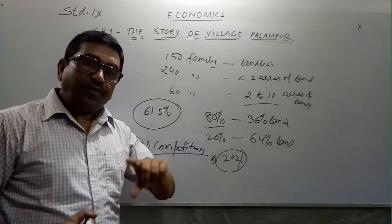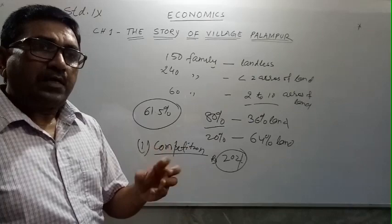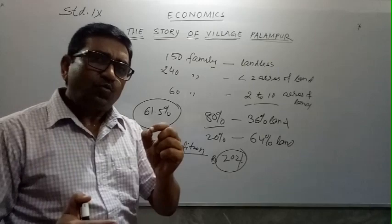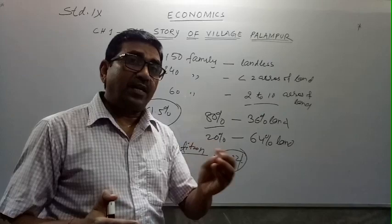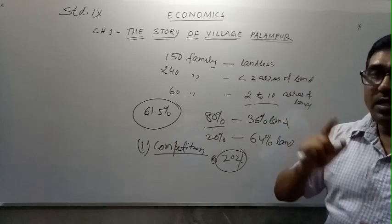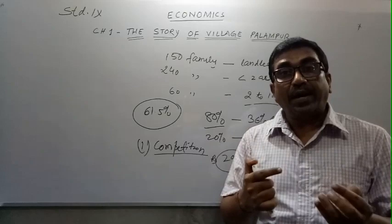Different state governments have different wage rates. The central government has fixed Rs. 375 for urban areas and Rs. 325 for smaller areas. In Tamil Nadu for example, the state government wages are higher than the central government provision. So we understand where labor comes from and why they are forced to work at lower wages.